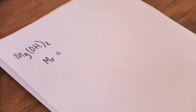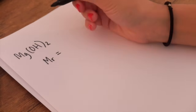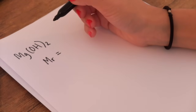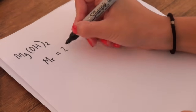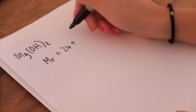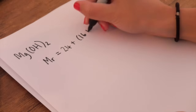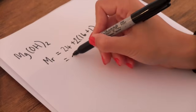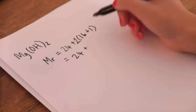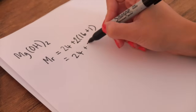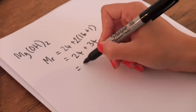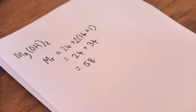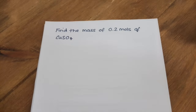Before we talk more about the triangle, I'm going to quickly show you how to calculate the relative formula mass — the Mr — of a substance. This is one of the simpler questions they could ask you. I'm going to calculate the Mr of magnesium hydroxide. Using the periodic table: magnesium is 24, plus oxygen which is 16, plus hydrogen which is 1, and then remember to multiply that by 2 due to the subscript 2. So 24 + (16 + 1) × 2 = 24 + 34 = 58. So the Mr of magnesium hydroxide is 58.